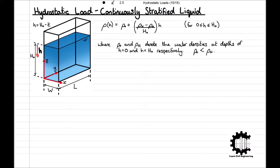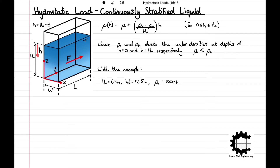Using these principles we will now calculate the hydrostatic load F and its corresponding centre of pressure acting on the end wall at y = L. We will find F and cp for the case when h_0 = 6.5 m, W = 12.5 m, rho_0 = 1000 kg/m³, and rho_h = 1115 kg/m³.